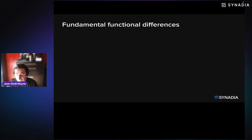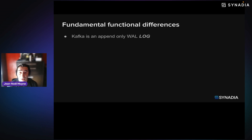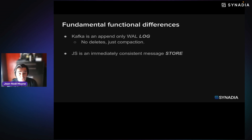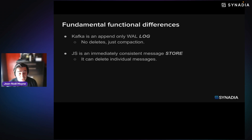From these fundamental design differences come a number of fundamental functional differences. Kafka is an append-only write-read log — you do not technically delete messages from a Kafka log, you can only have compaction. You can only add messages; you cannot delete them anywhere inside the log. Compare that to JetStream, which is an immediately consistent messaging store. What I mean by store versus log is that you can delete individual messages. This is a core fundamental difference between the two, and a lot of use cases may be easier with one or the other depending on whether you need a log or a proper store.